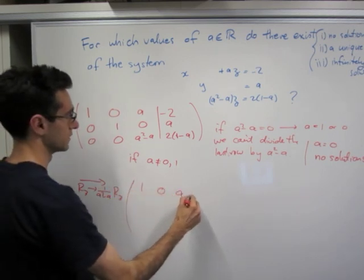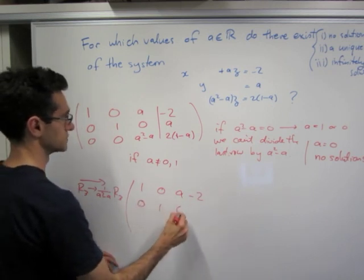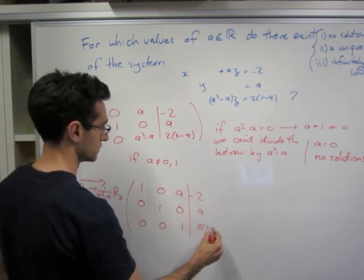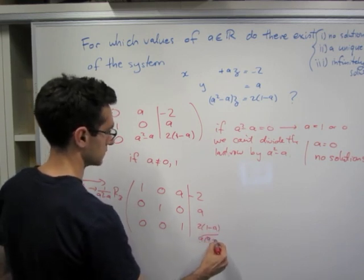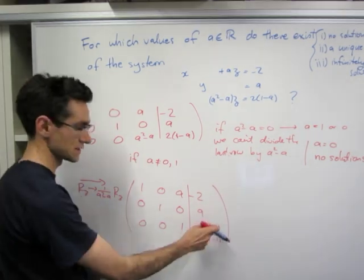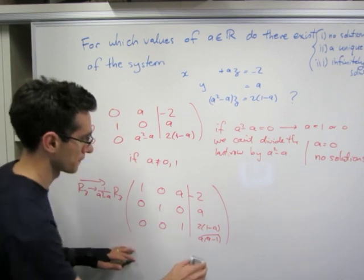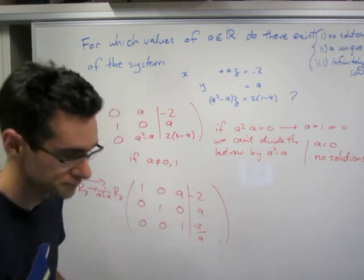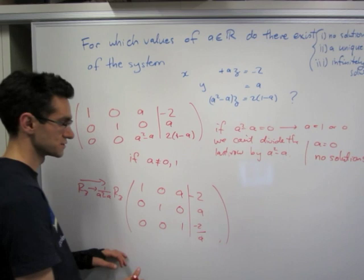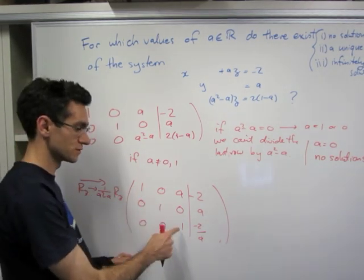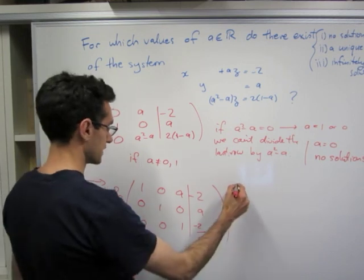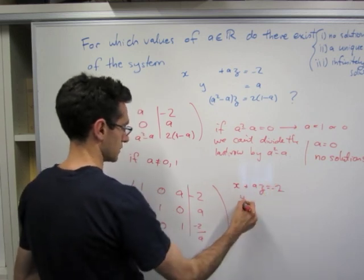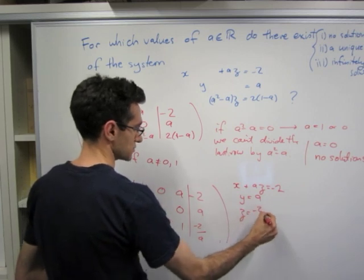So now, if a is not equal to 0 or 1, we can do some row operations, namely, send row 3 goes to 1 over a squared minus a, row 3. Therefore we get 1, 0, a minus 2, 0, 1, 0, a, 0, 0, 1. And we find 2, 1 minus a over a times a minus 1. And we can just cancel out these at the expense of a minus sign, minus 2 over a. So we can write out the equations that these correspond to. So we have a unique solution. We have a single pivot in each column. So we can write out x plus az equals minus 2. We have y equals a. We have z equals minus 2 over a.